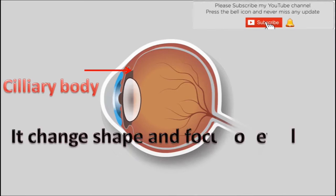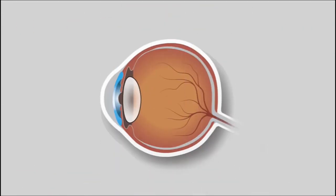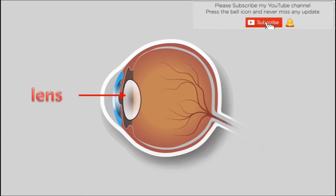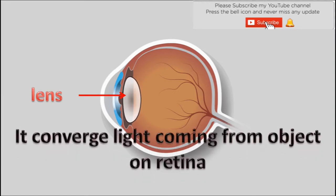Ciliary muscles — it changes the shape and focus of the eye lens and gives support to the eye lens. Lens — the lens found in the eye is a convex lens. It converges light coming from an object onto the retina, where its picture is formed.